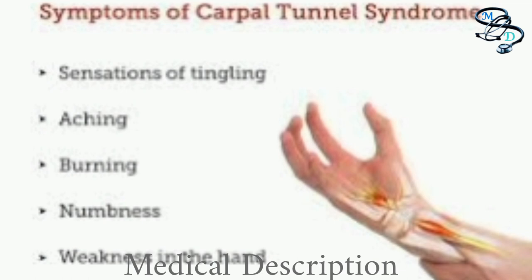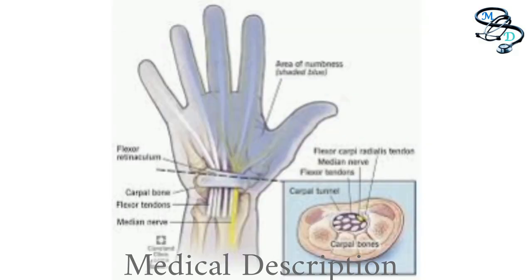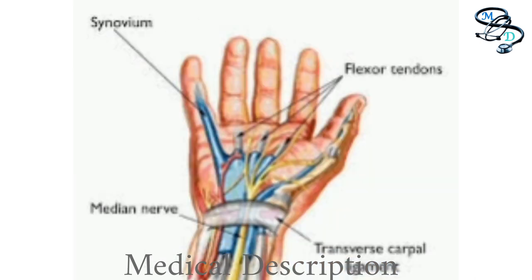These symptoms often occur while holding a steering wheel, phone, or newspaper, or may wake you from sleep. Many people shake out their hands to try to relieve their symptoms, and the numb feeling may become constant over time. There might also be weakness — you may experience weakness in the hand and drop objects.